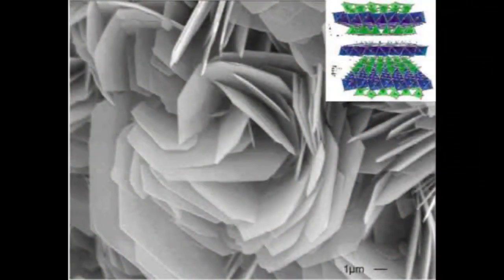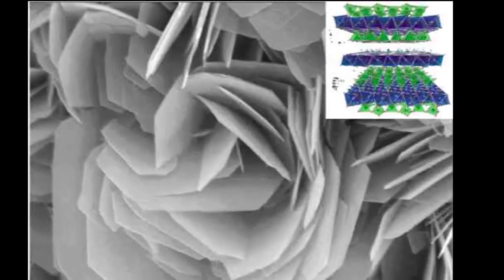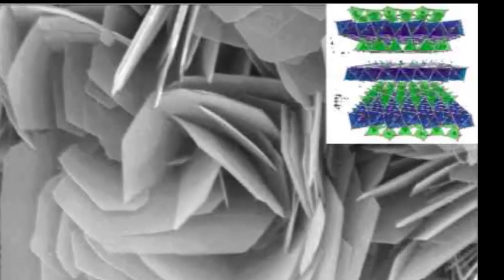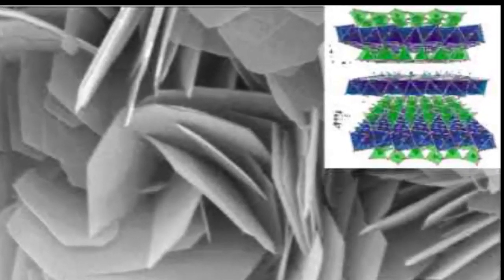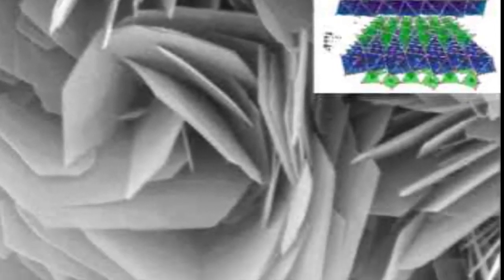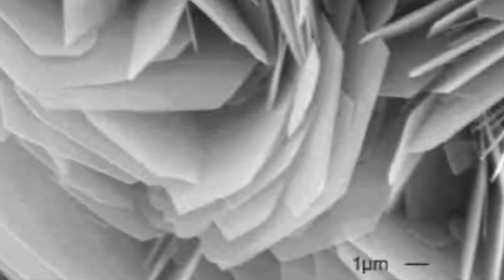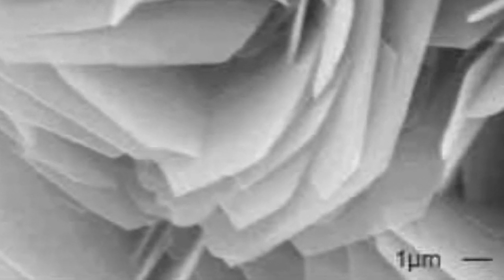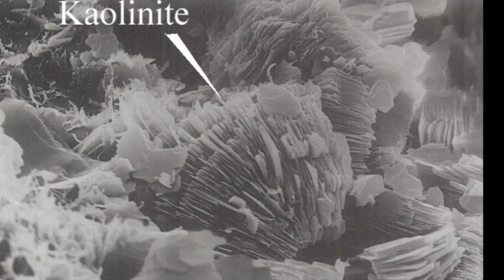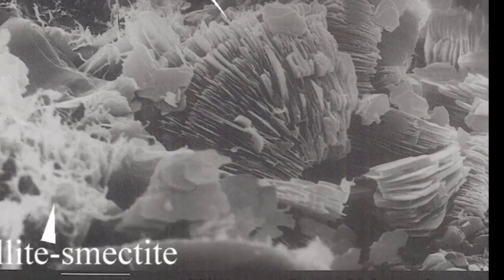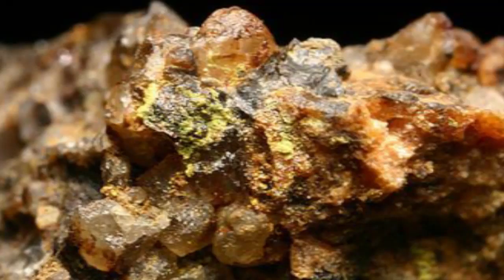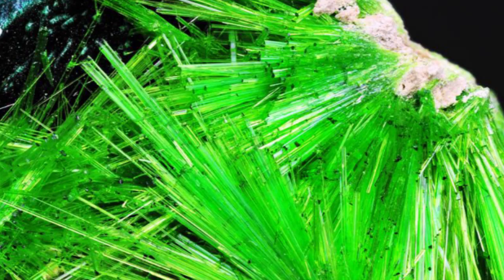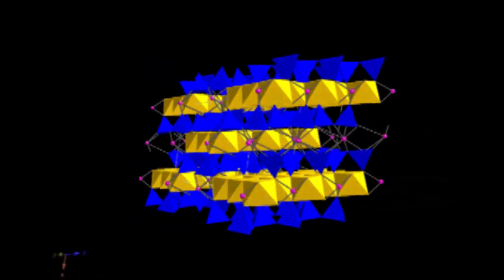Clay is a size term, but is also a mineral group of mostly sheet silicates of very small size. It's a zoo down there with montmorillonite, kaolinite, smectite, illites, lizardite, and many others.